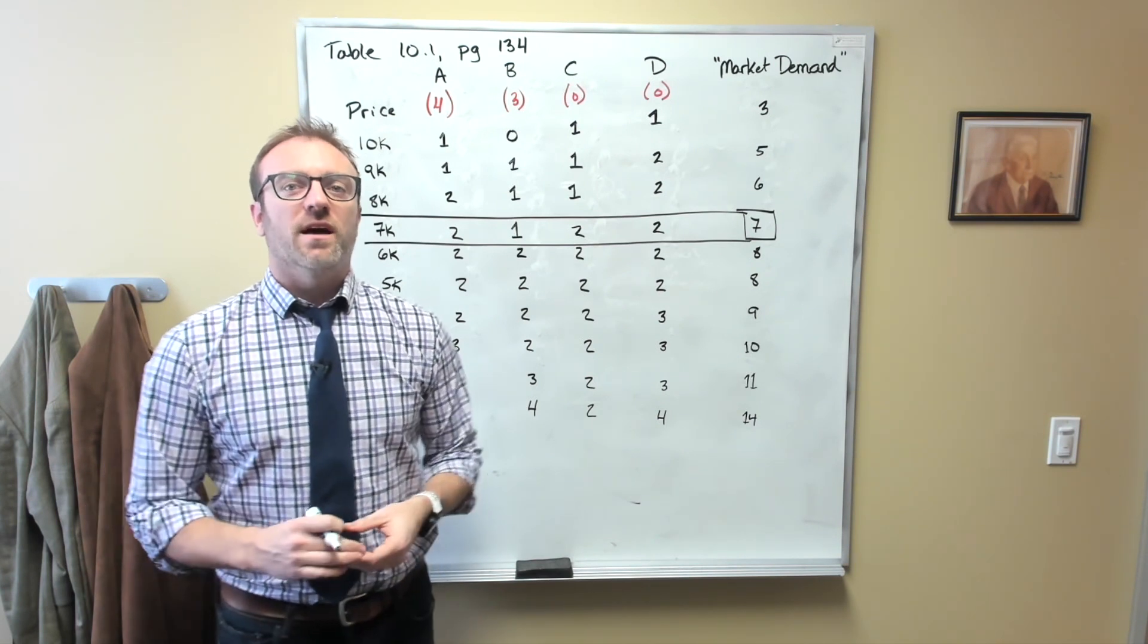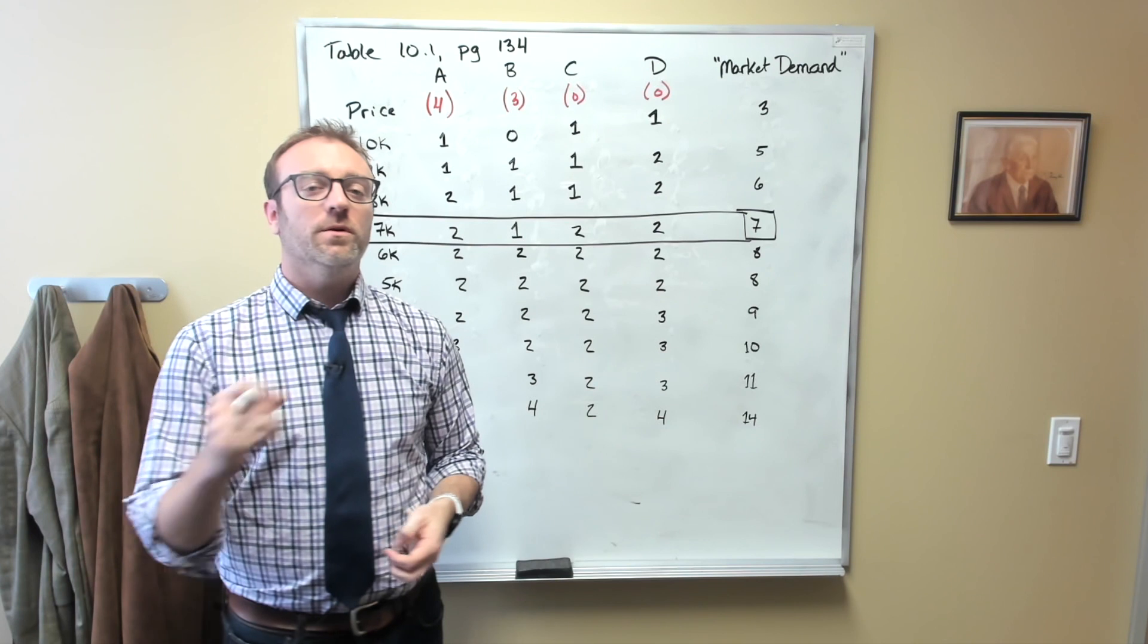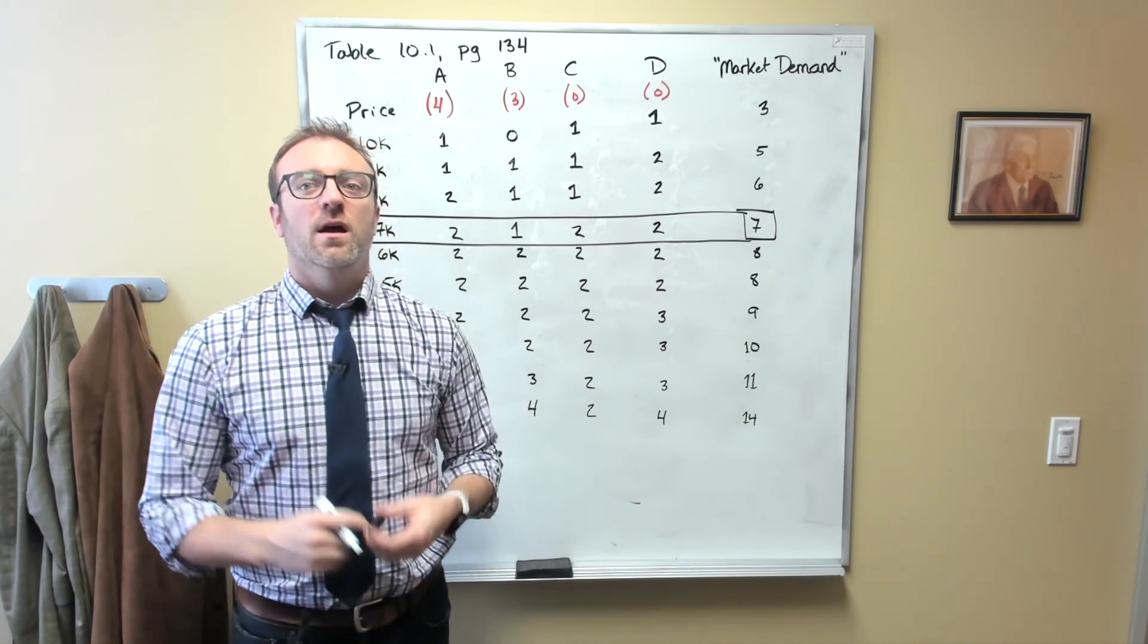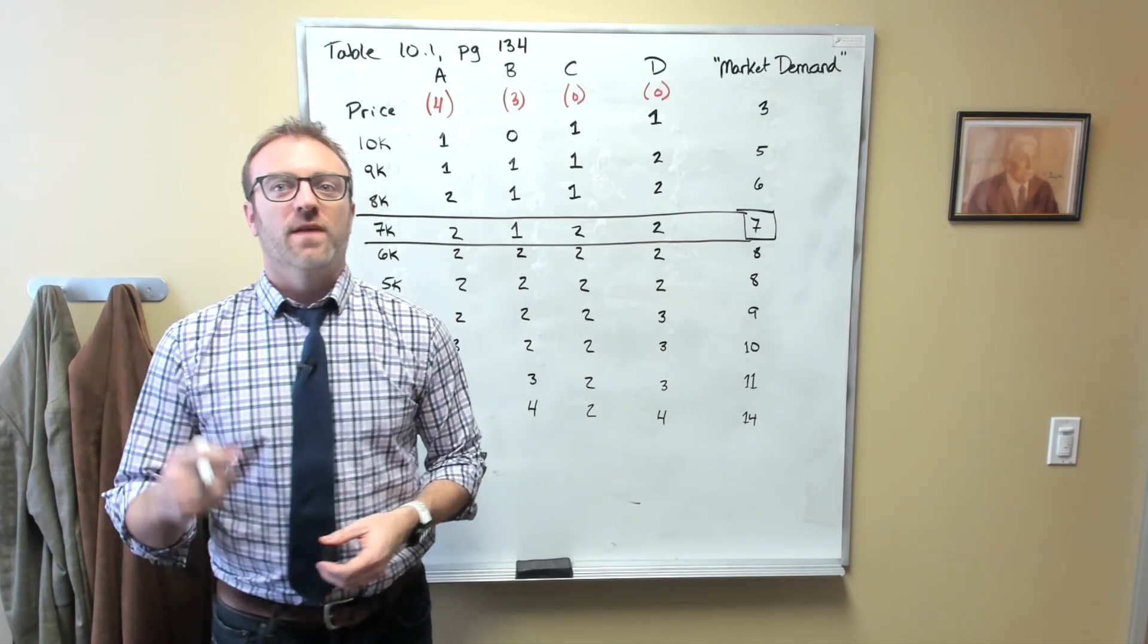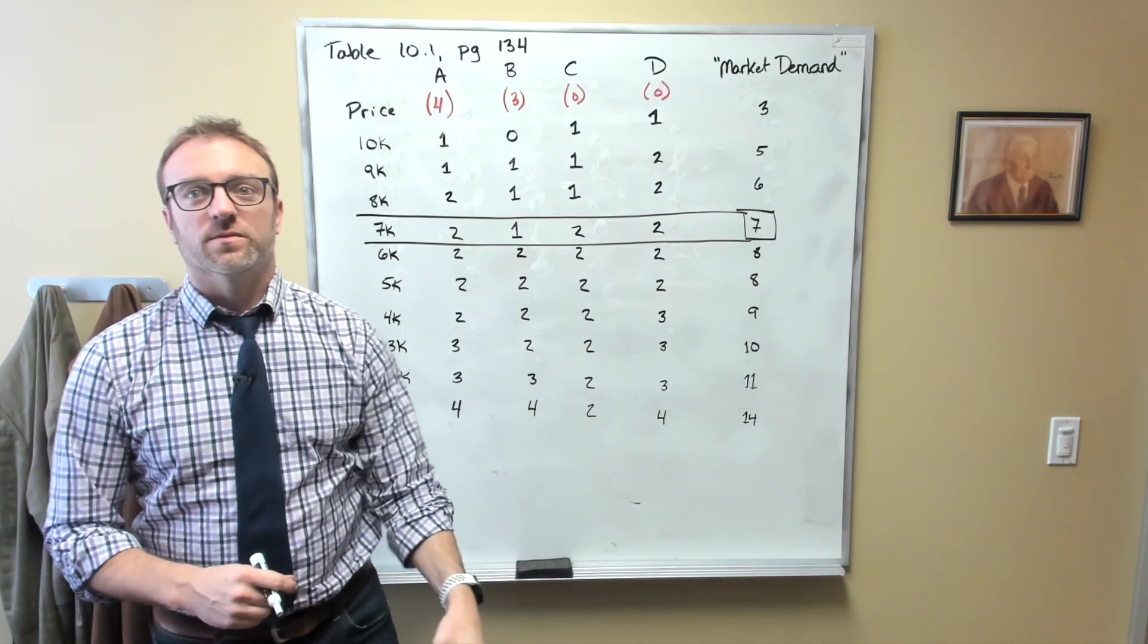Now what's really interesting here is that in this scenario, it doesn't really matter who owns the seven cars to begin with. The end result will be the same. Cars will sell for $7,000 each, A will end up with two, B will end up with one, C will have two, and D will have two all in the end. And this is actually a really important insight into economics. Almost always, the initial endowments don't really matter as long as people are free to exchange with one another and there's nothing in the way of them organizing these actual trades.